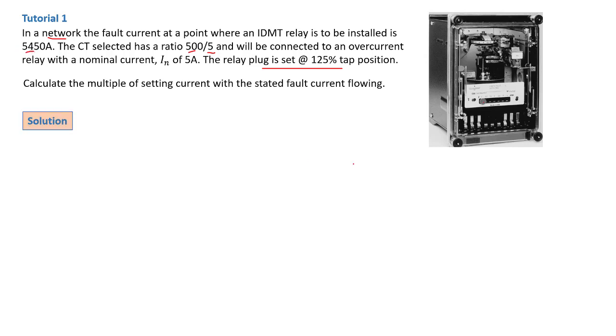Moving on into the solution, what is the multiple of setting current? That is M. We need to find M. You can watch the video in the description box where I talked about how the IDMT Relay functions. M, the formula for M is actually given by the secondary current divided by the setting current.